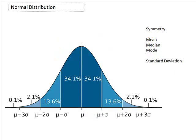You can see in our normal distribution image that the mean has been labeled, but also the standard deviations. So we have one standard deviation, two standard deviations, and three standard deviations above, and then the same below the mean. Something to remember about a normal distribution is the percentage of scores that lie within so many standard deviations of the mean.